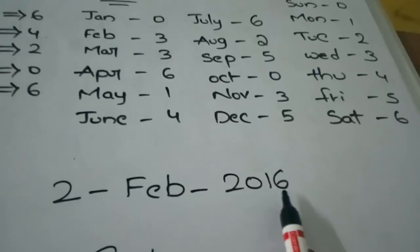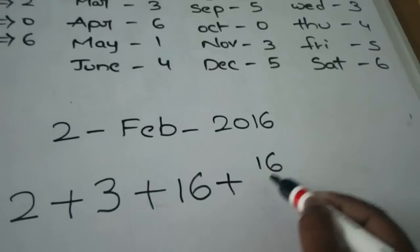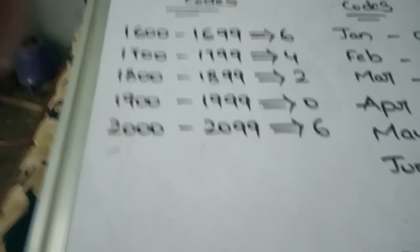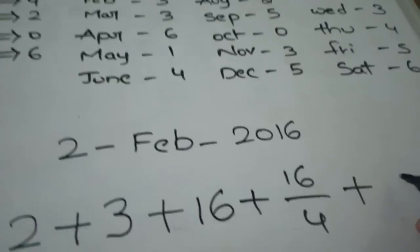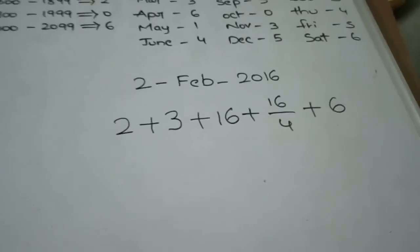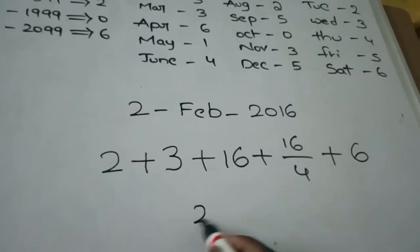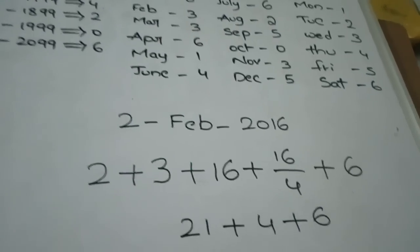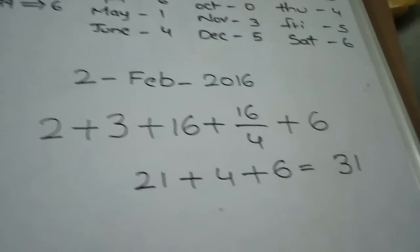Next, take the last two digits of the year — 16 — and add them. Then take 16 divided by 4. For the century code: 2016 falls between 2000 and 2099, so we add 6. Now add everything: 2 plus 3 is 5, plus 16 is 21, plus 4 (which is 16 divided by 4) plus 6. The total sum is 31.